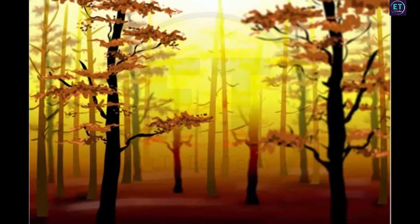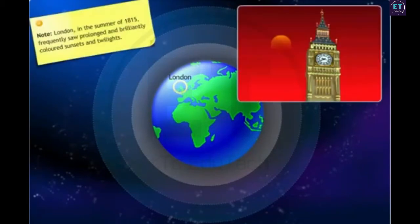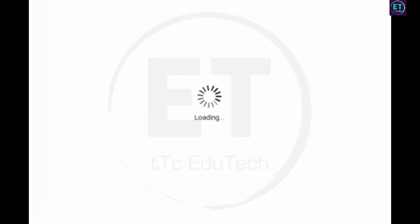This happens due to the scattering of light by particles of dust and smoke in the air. Similarly, when sunlight passes through the canopy of trees in a forest, you can see the Tyndall effect at work again. The mist in the forest contains tiny droplets of water, which act as particles of colloid dispersed in air. In fact, here is an interesting incident related to the Tyndall effect. London, in the summer of 1815, frequently saw prolonged and brilliantly colored sunsets and twilights. This was explained by the Tyndall scattering of sunlight by ash particles in the upper atmosphere. These ash particles were produced by the earlier eruption of the volcano, Tambora.